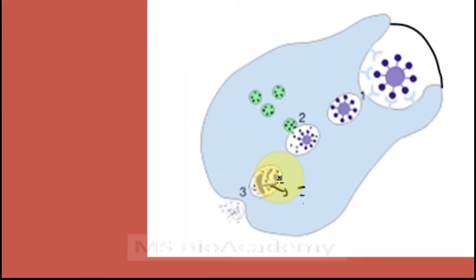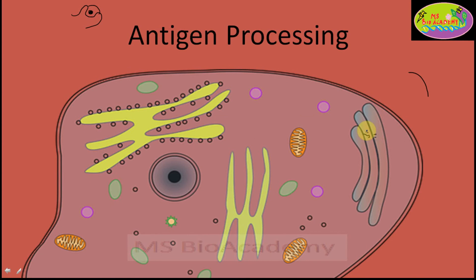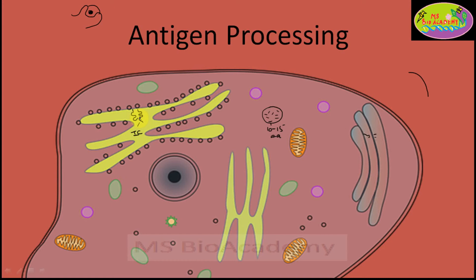Now let's move on and talk about how assembly with MHC class 2 molecules takes place with these peptides. Coming back to the MHC molecule — as we said, they are also assembled in the rough endoplasmic reticulum. This is the MHC class 2 molecule being assembled. During this assembly, there is one invariant chain which comes and binds to the groove portion of the MHC class 2 molecule.